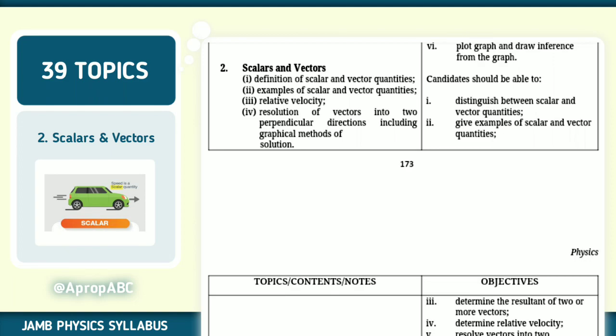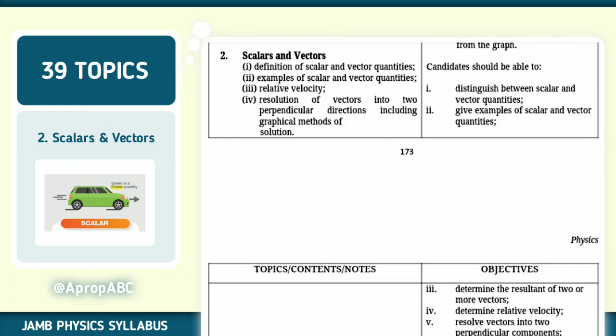The second topic, we have scalars and vectors. Scalar quantities are the quantities that have magnitude, but they don't have direction. While vectors, they have magnitude and at the same time, they have direction. So they have the speed, they have the magnitude, the values, and they have a particular direction. Is it north, east, north west? Name the direction. You can get it through prescription.